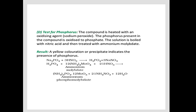This is an additional note — these phosphorus reactions are not given in your course, but they have been added to help you understand the test for phosphorus and its results. Nitric acid reacts first, then ammonium molybdate reacts, and after that we get ammonium phosphomolybdate. Yeh compound yellow precipitate ki form mein hota hai, aur iski presence se hum phosphorus detect kar sakte hain.